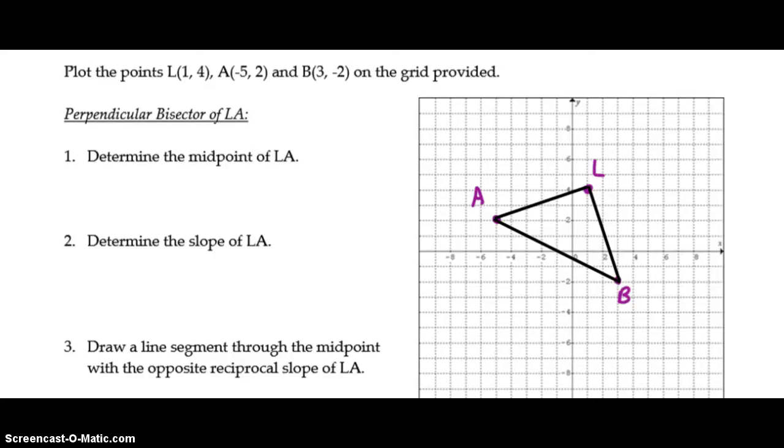So what we're going to do is get the perpendicular bisector of LA. So it's going to pass through the midpoint of LA, which you can see is there at negative 2, 3. And it's going to be perpendicular to LA. So the first thing we need to do is get the midpoint of LA. So x1 plus x2 divided by 2, and y1 plus y2 divided by 2. So that works out to negative 4 over 2 and 6 over 2, which is negative 2, 3. So there's the midpoint. Ticks to indicate that it's the midpoint.